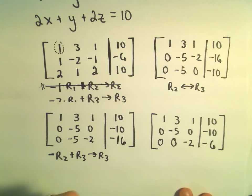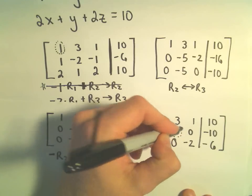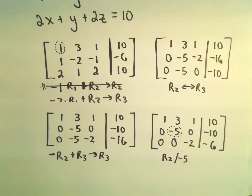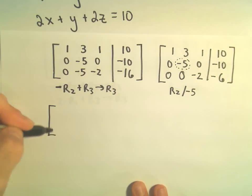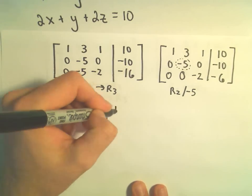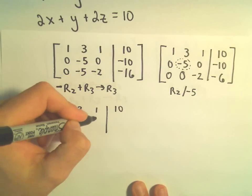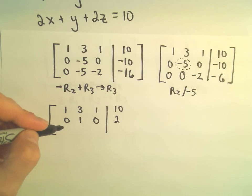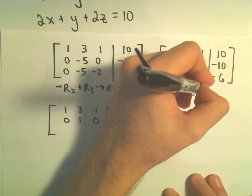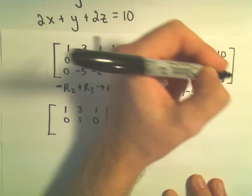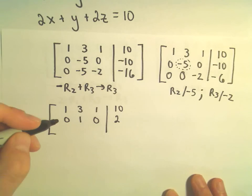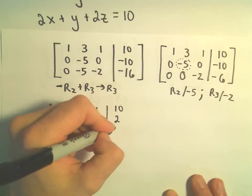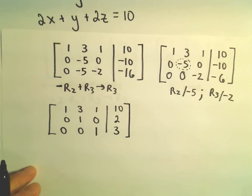Next, I'm going to make the negative 5 into a positive 1 by dividing row 2 by negative 5. The first row stays the same. The second row becomes 0, 1, 0, and positive 2. I'm also going to divide row 3 by negative 2, giving 0, 0, 1, and positive 3 — since negative 6 over negative 2 is positive 3. So we're getting pretty close.